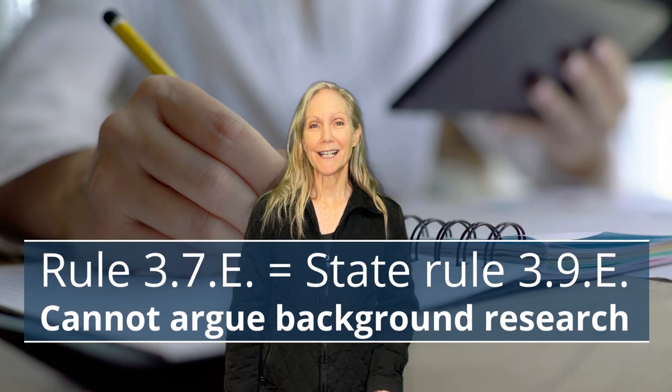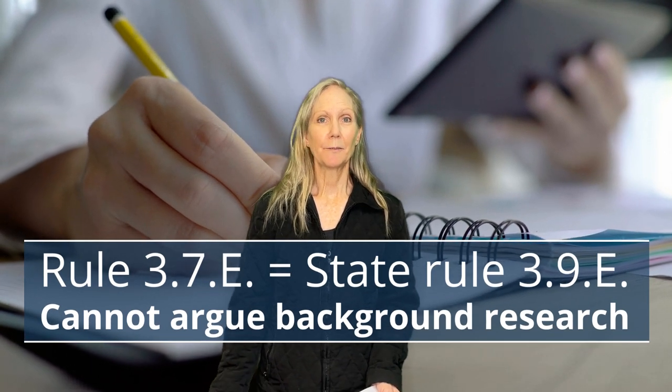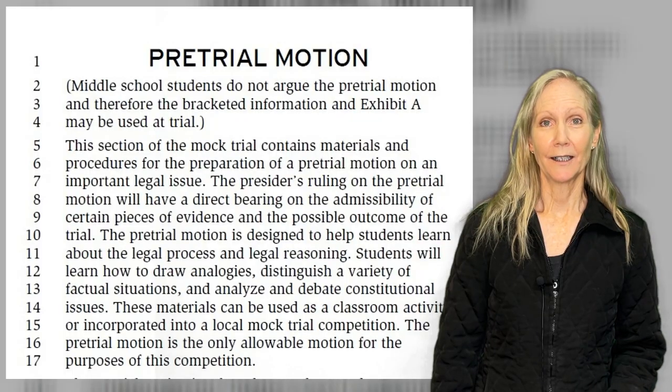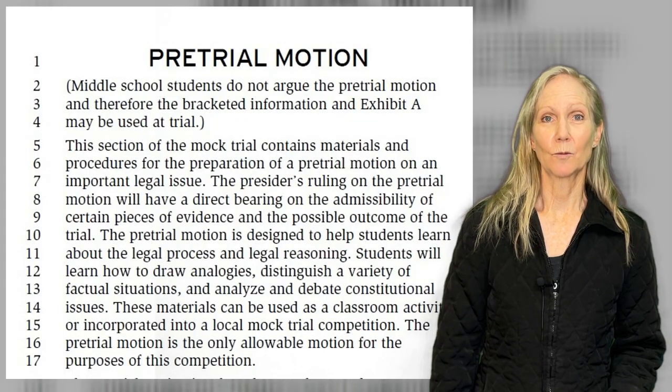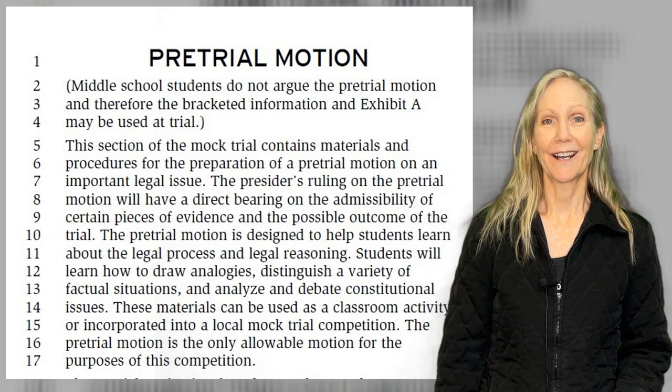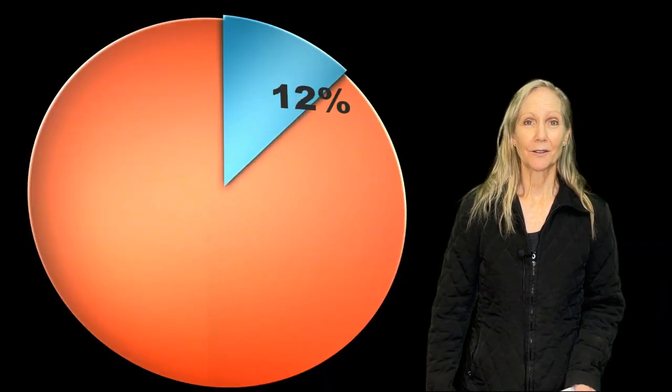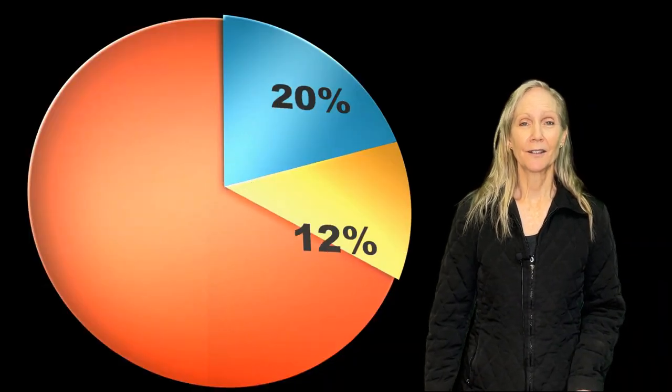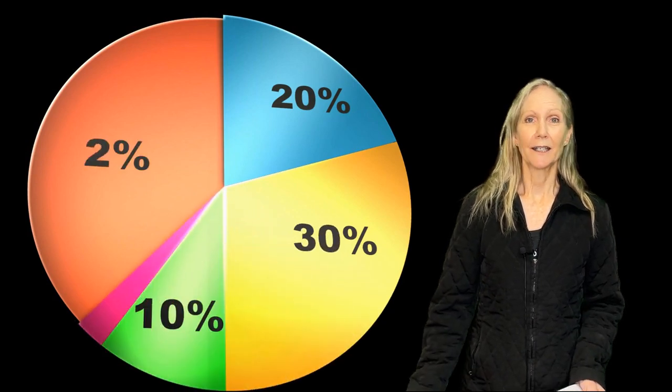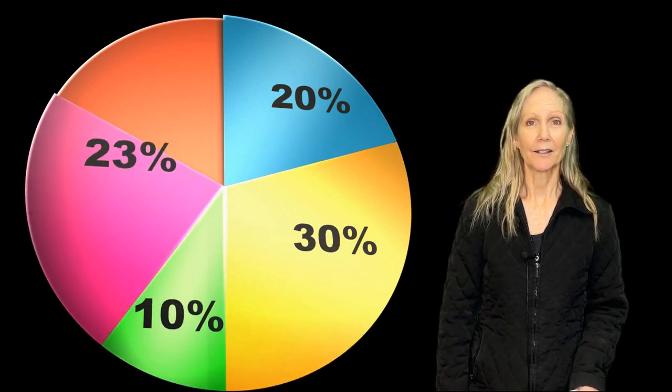Rule 3.7c: if pretrial people go look at other supplemental materials to learn more about the issues, that's fine, but they can't cite to any other supplemental materials during their argument. They have to stick with what is provided in the pretrial case packet and the rules there, as well as what's allowed to be used in pretrial that year. Some years it's just a portion of some of the statements; other years the pretrial can argue anything in the packet. You have to read what it is that year.